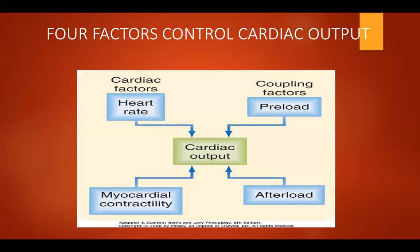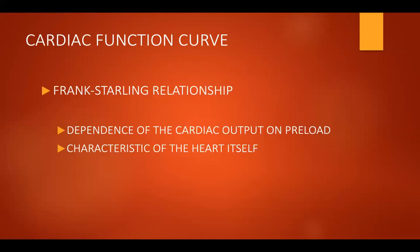These are important determinants of the cardiac output and are themselves determined by the cardiac output, so we call them coupling factors. The cardiac function curve is an expression of the well-known Frank-Starling relationship, and it illustrates the dependence of cardiac output on preload. An example is your central venous pressure and right atrial pressure, which is dependent on your superior vena cava and inferior vena cava pressure, and also dependent on the characteristics of the cardiac muscle or myocardium.